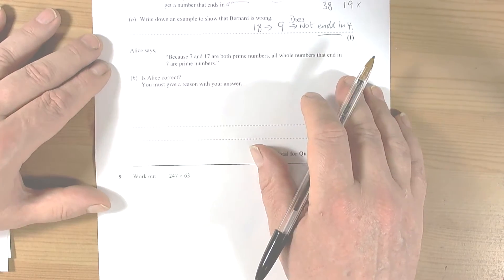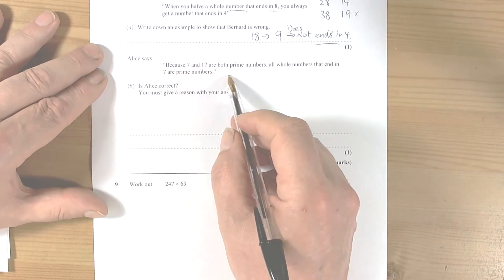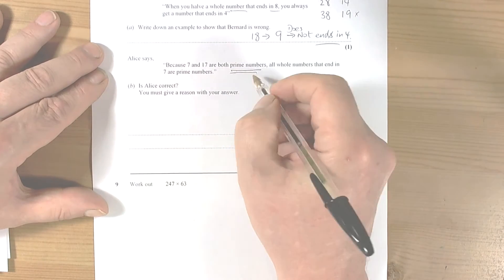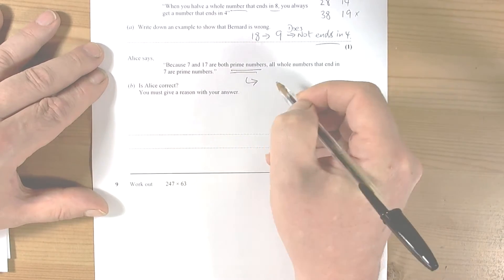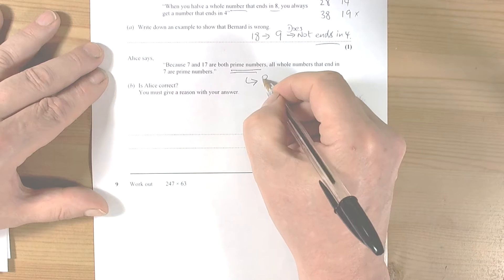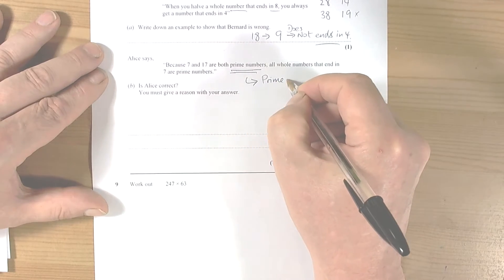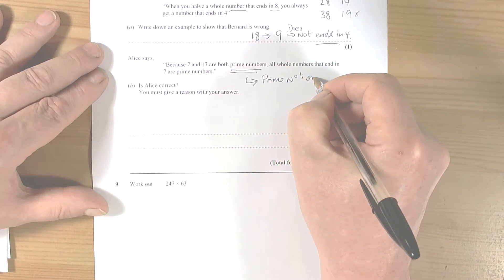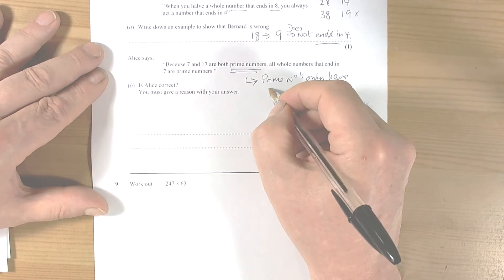Alice talks about prime numbers here, so look, prime numbers, it's really important we practice this. Prime numbers only have two factors. That's the definition of them.